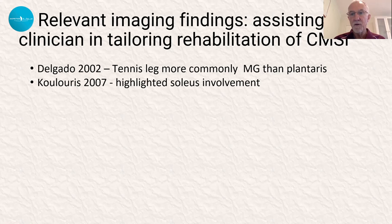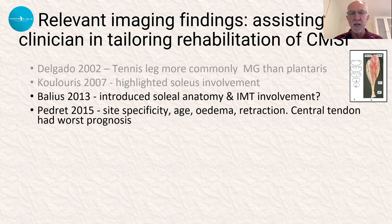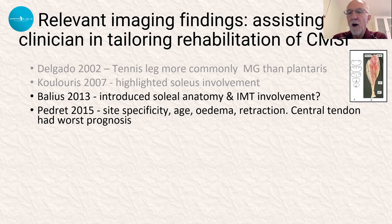It was only the later work of Colouras, looking at high-level athletes, that really highlighted soleus involvement — something like 60% of calf muscle injuries involved the soleus muscle complex. This was further reinforced by the work of Bailey, who showed an even higher percentage and introduced the soleal anatomy, previously identified by Finney and Hodgson, highlighting that soleal strains tended to occur in and around these intramuscular tendons within the soleus.